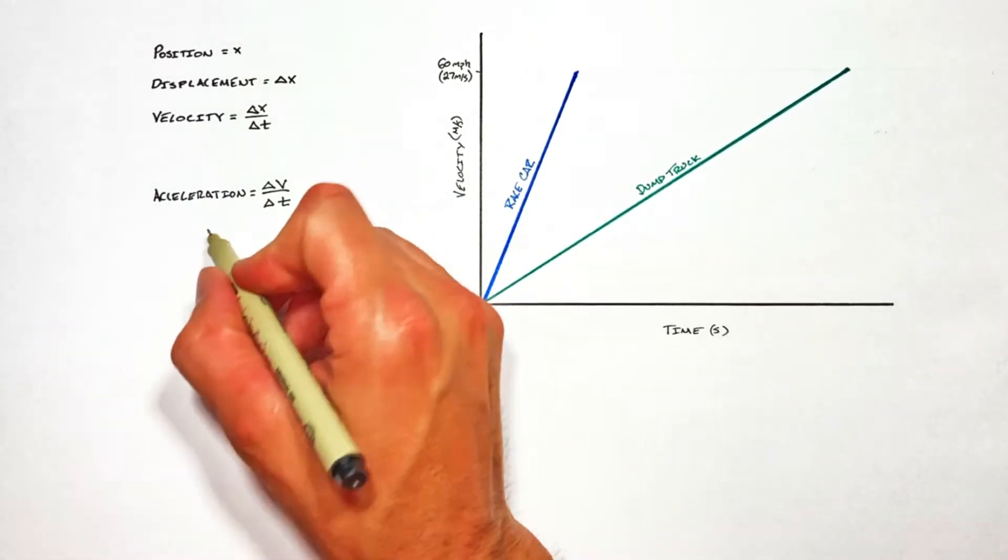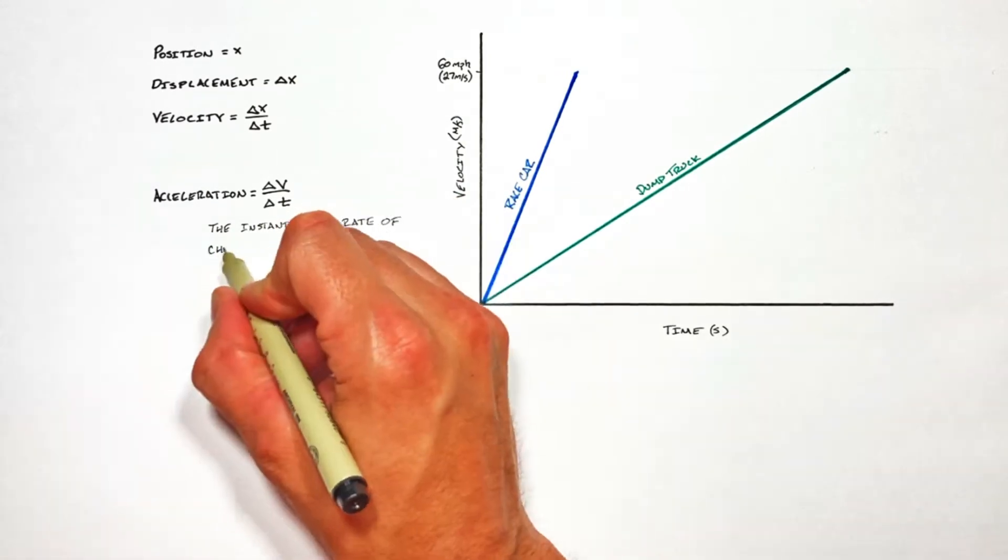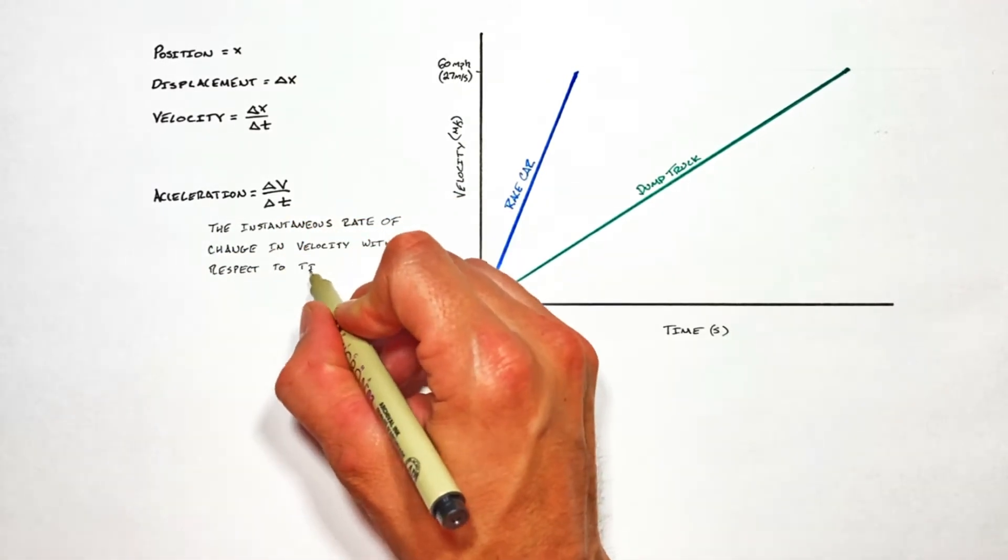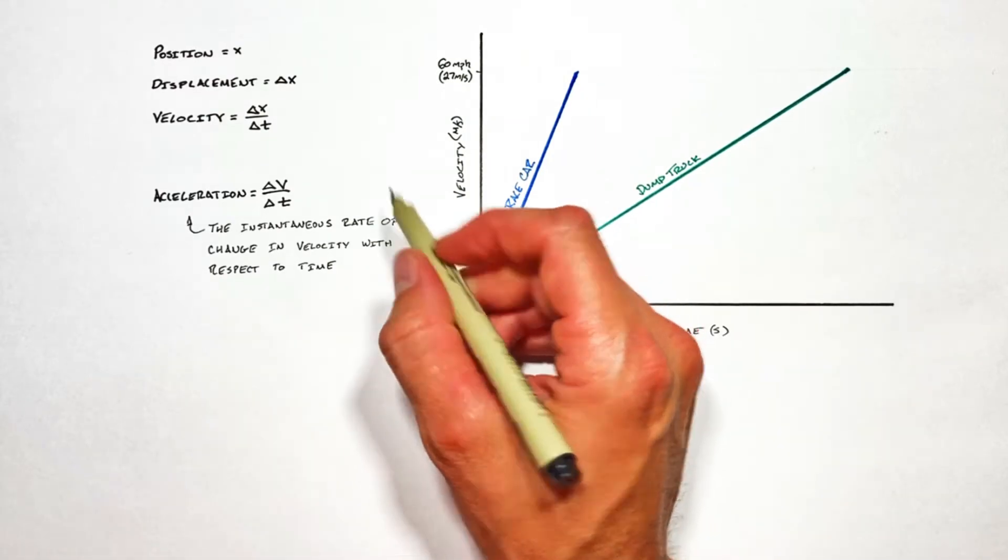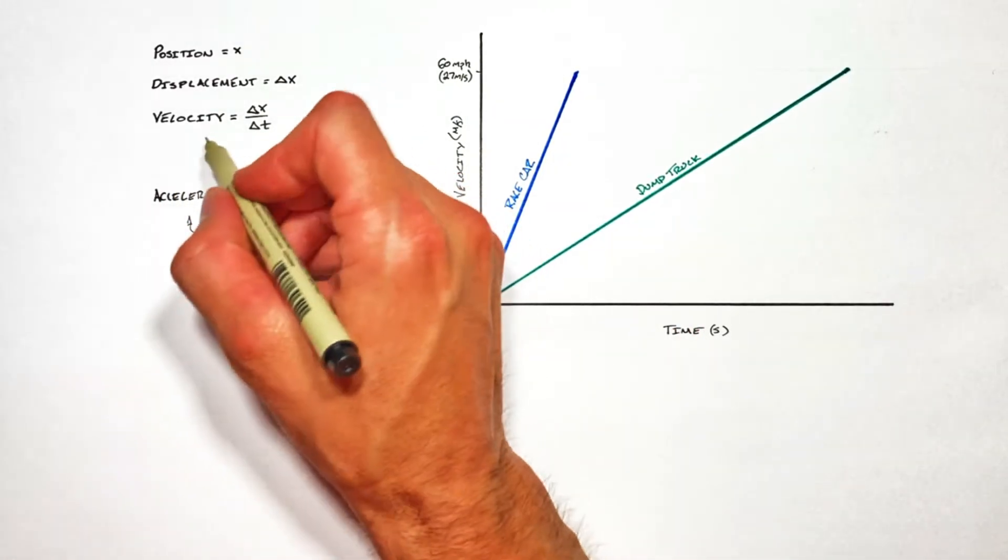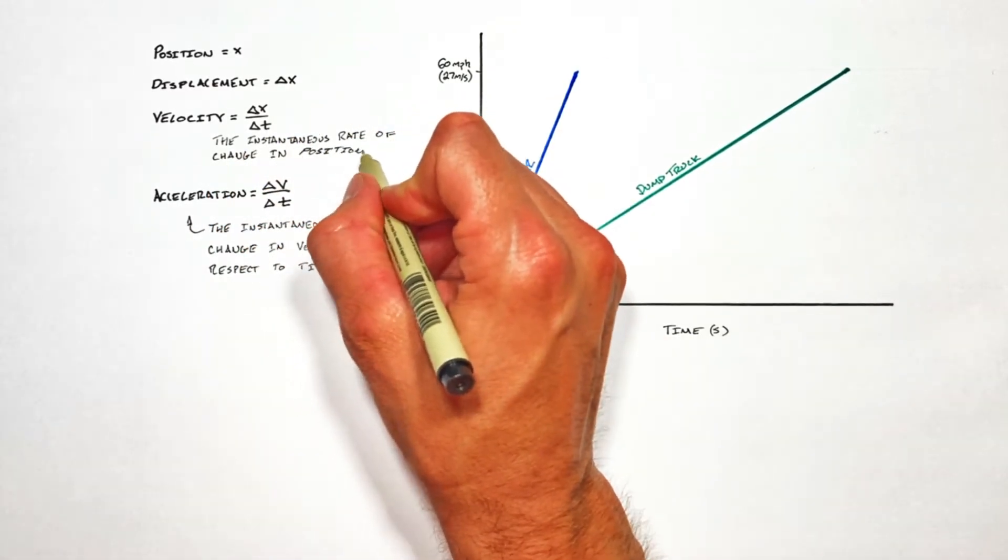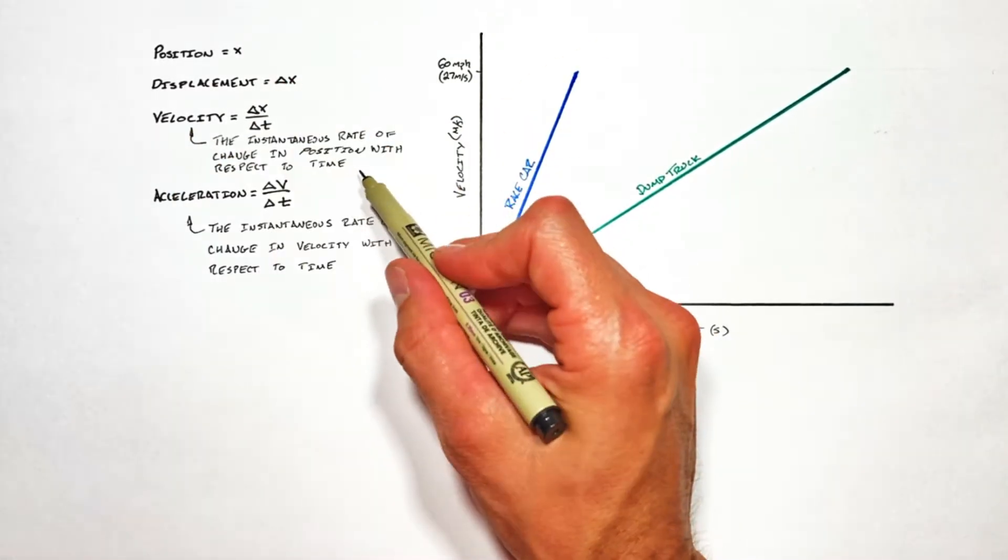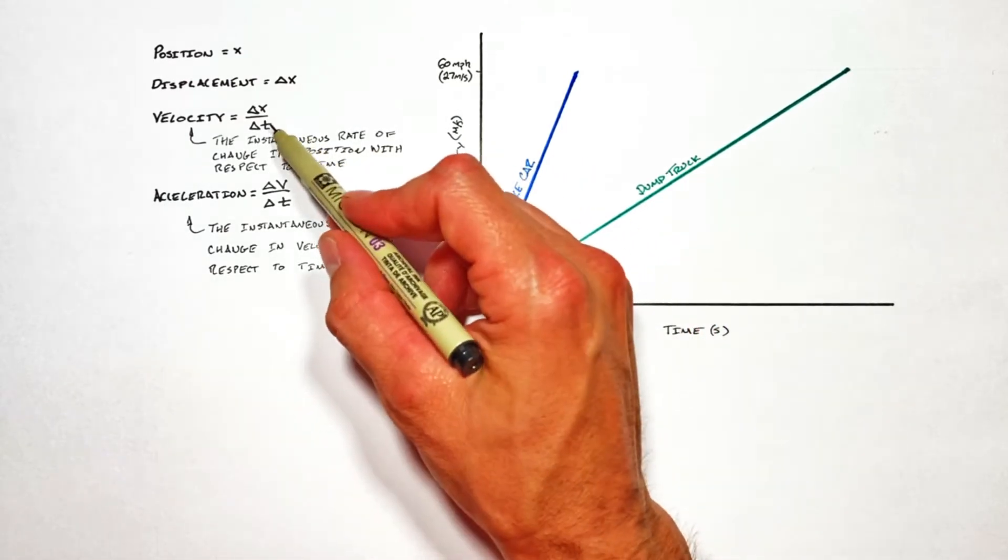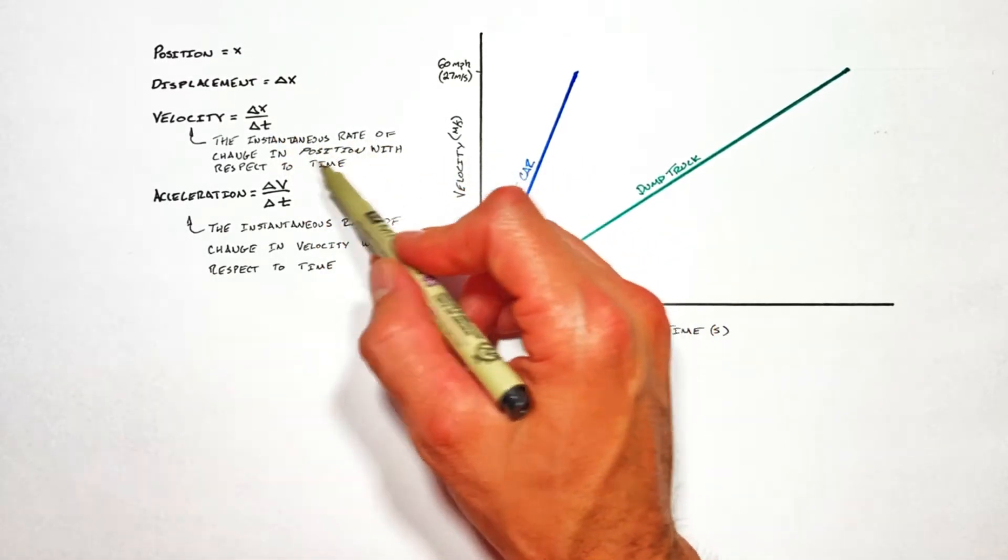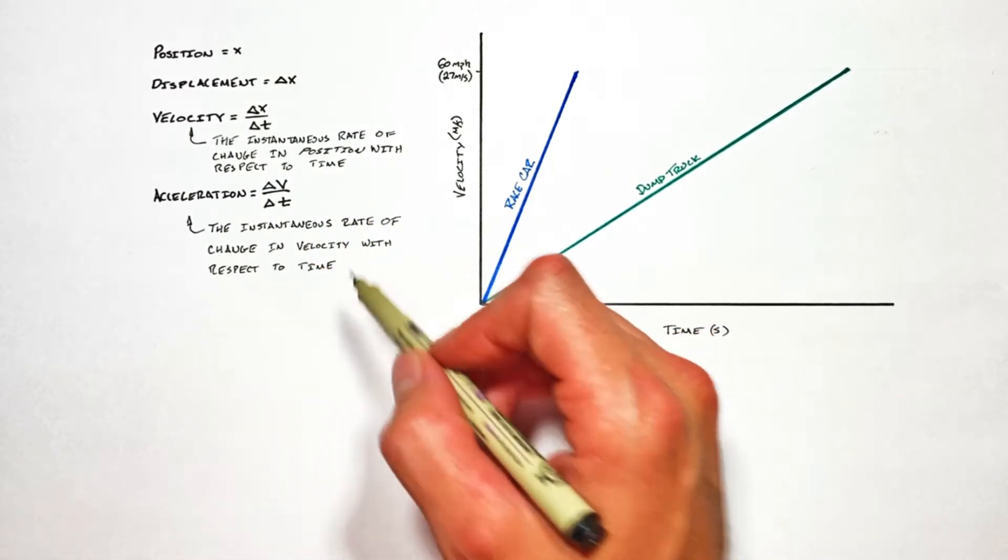If you look at a physics book, you'd see acceleration defined as the instantaneous rate of change in velocity with respect to time. That definition should feel familiar. We define velocity as the instantaneous rate of change in position with respect to time. The only difference is simply in one case we're measuring how fast position is changing, and in the other we're measuring how quickly velocity is changing.